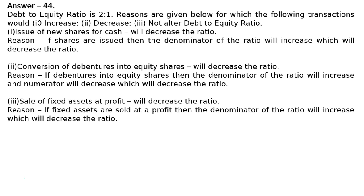Third: Sale of fixed assets at a profit will decrease the ratio, because if fixed assets are sold at a profit, then the denominator of the ratio will increase — profit increases the equity — which will decrease the ratio. If we are selling fixed assets at a profit, then equity will be increased.